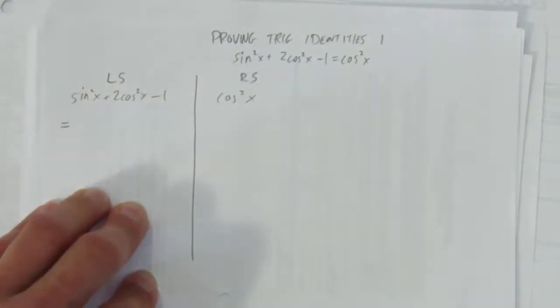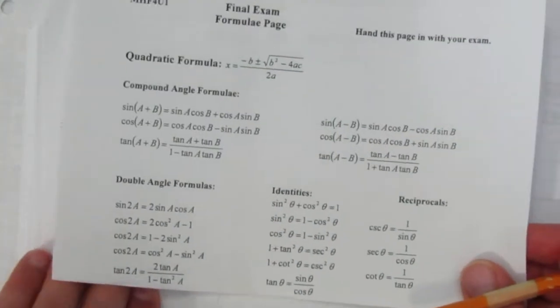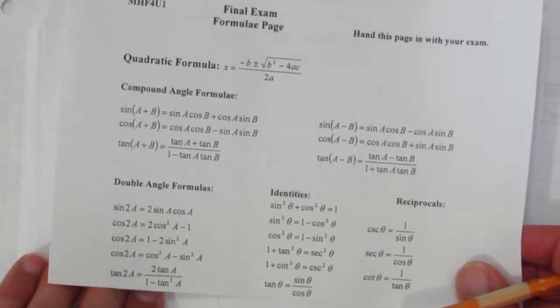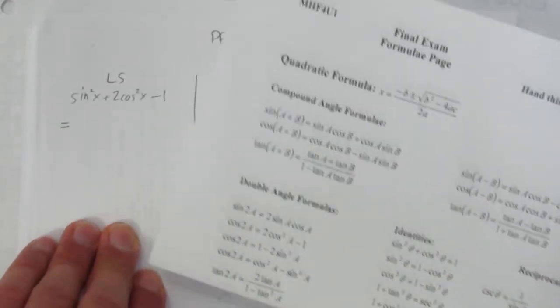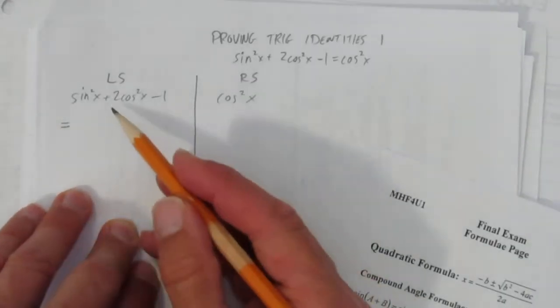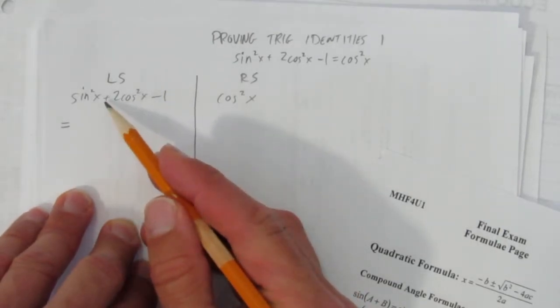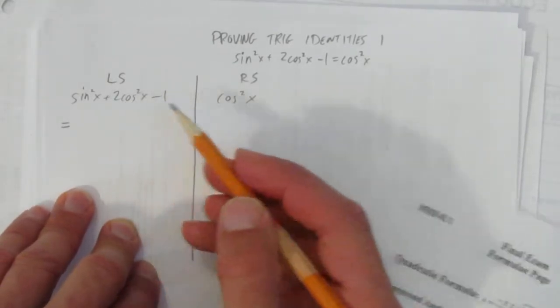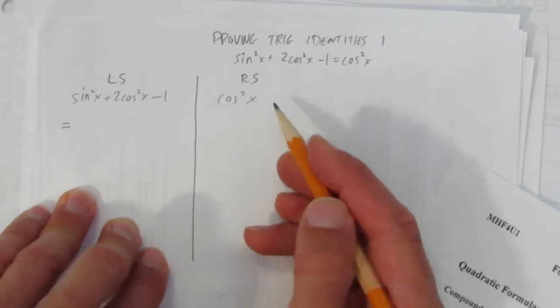You should have your formula sheet handy, something that looks a bit like that, or hopefully a lot like that. So I need to find what to do here. I've got sin²x + 2cos²x. I know that I just want cos²x at the end.